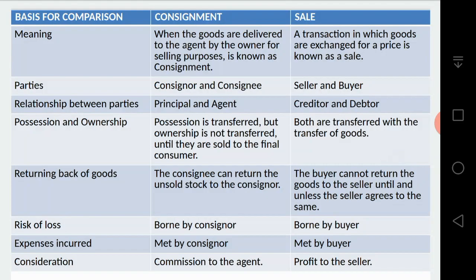Next is the risk of loss. If any kind of risk or loss occurs to the goods — for example, if a consignment is sent from one country to another, marine insurance and other types of insurance are typically involved. The goods are always insured before being sent, because anything can happen during the voyage — a storm or other damage could occur. If the goods are not insured and some loss occurs, that loss is borne only by the consigner. The consignee has nothing to do with this.